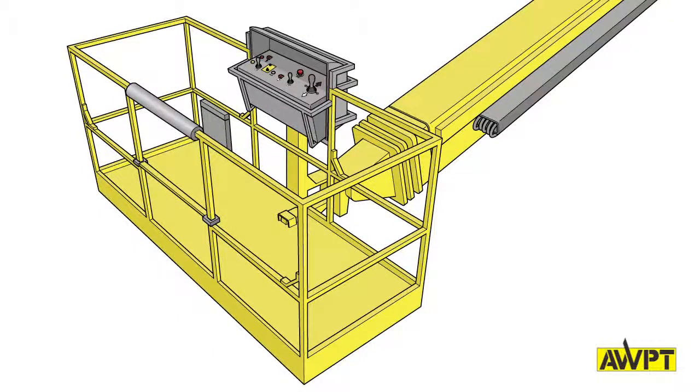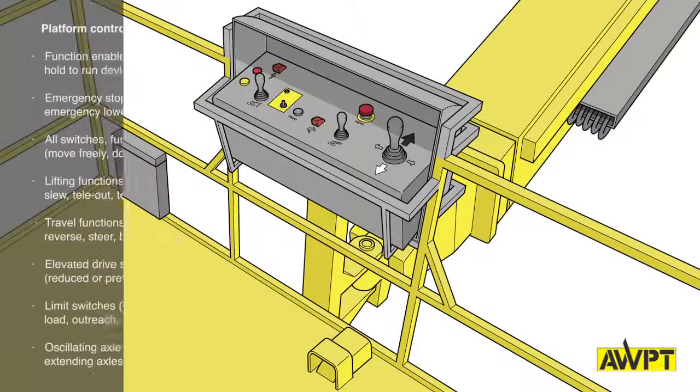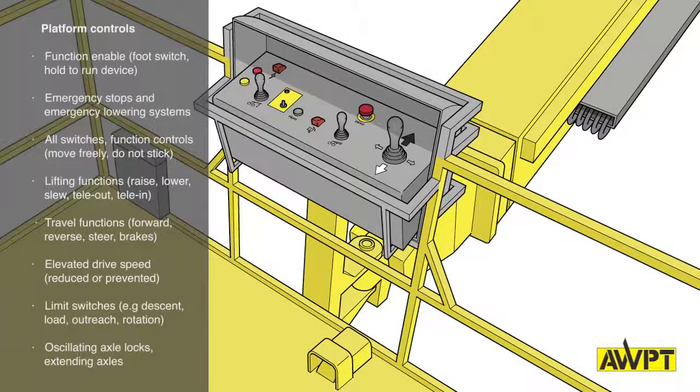Remember to use three points of contact for access to the platform through the platform gate. Attach and adjust the harness to one of the anchorage points provided. The ground controls decals should be clear and visible for each control.